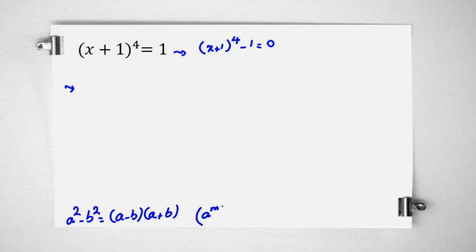We know that a to the m to the n equals a to the mn. So it will be x plus 1 squared squared minus 1 squared equals 0.